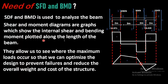As you can see here, here is the maximum positive shear and here we have a maximum negative shear. Here we have a maximum bending moment and here we have a zero bending moment — that is the point of zero bending moment, also called the point of contraflexure.